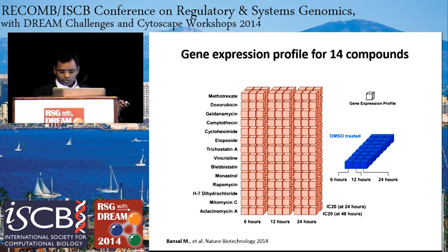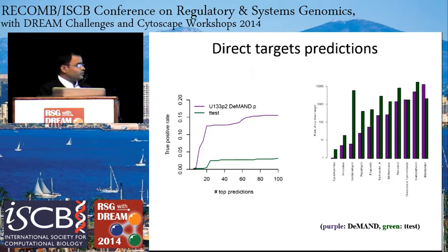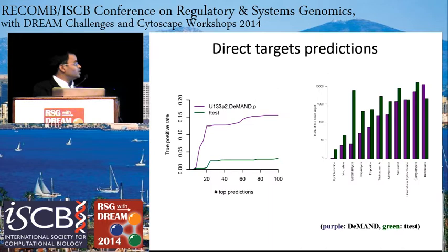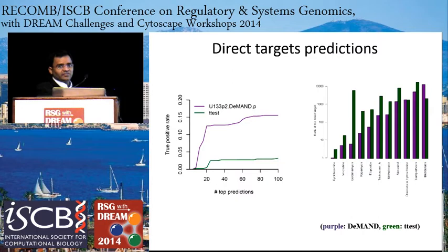We applied the DEMAND method on all 14 drugs. To validate, instead of checking for drug mechanism of action directly, we first checked how well we can identify the primary targets for these drugs. From the literature, we could identify primary targets for 11 of the 14 drugs. Looking at the top 100 genes predicted by DEMAND for all these drugs, for all 11 drugs we could identify the primary target — achieving 15% sensitivity. I want to note that this method is not designed to identify primary targets; we are just checking its efficacy.